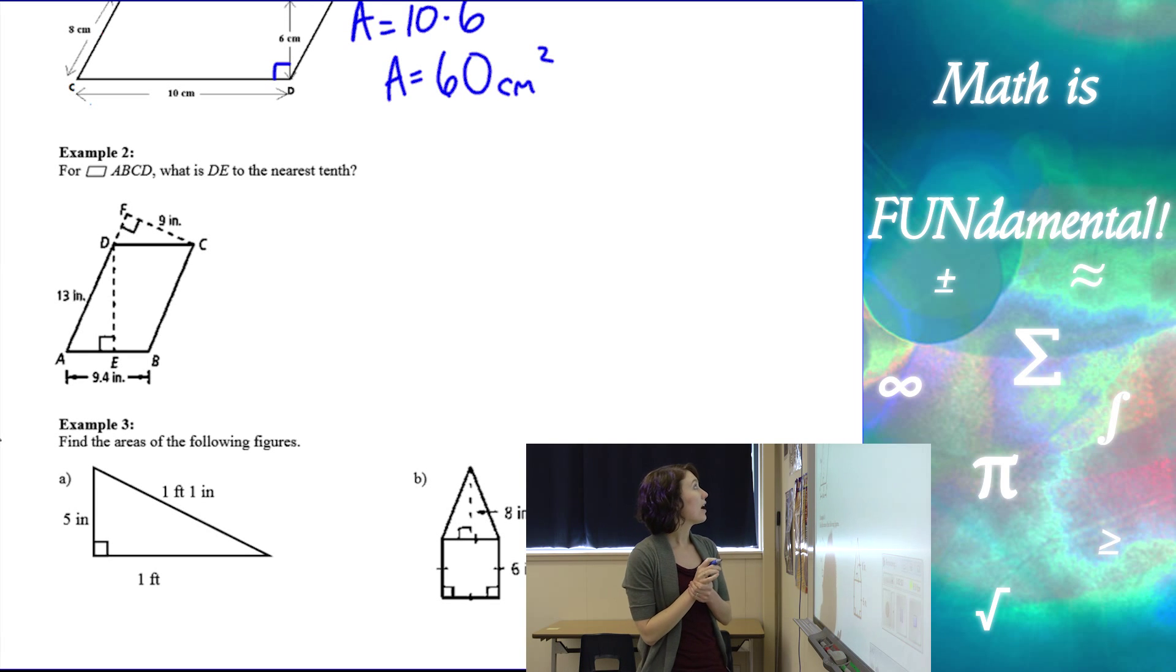Our second example, we have another parallelogram, but this time, it's asking us to find the length of DE. So here, I'll mark that with an X on our diagram. Now, if we look at what we have, we can think about right triangles, but we don't quite have enough information to solve based on just a right triangle. So what we're going to do is we're actually going to find the area of the figure, and then kind of use that area to find X.